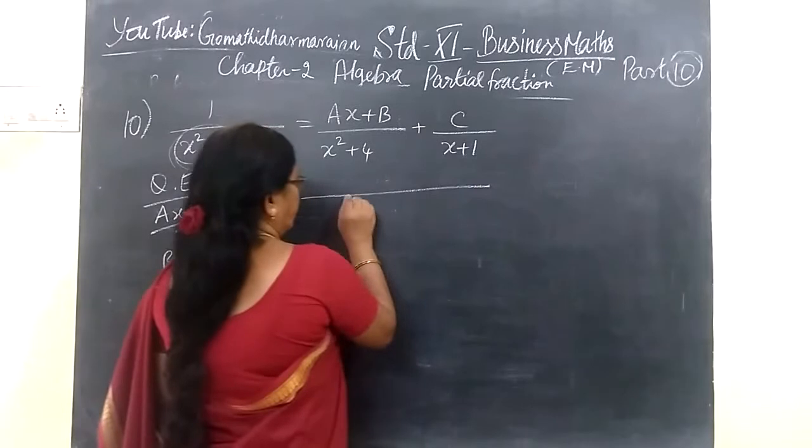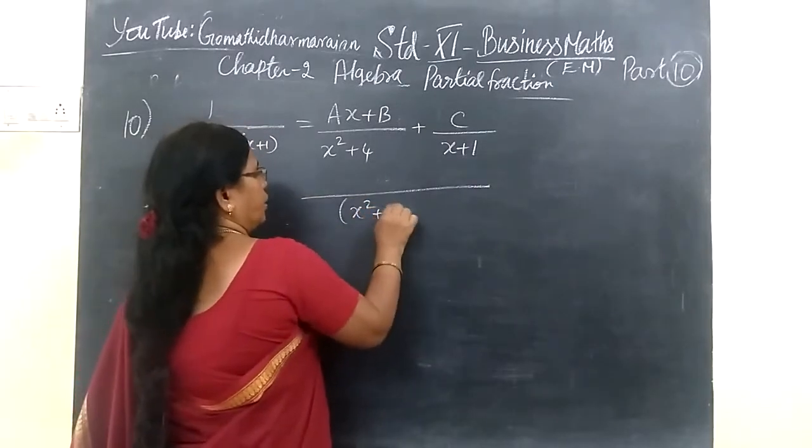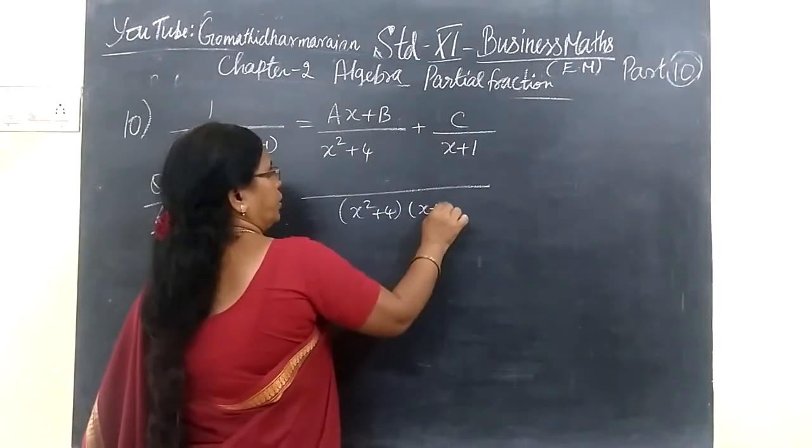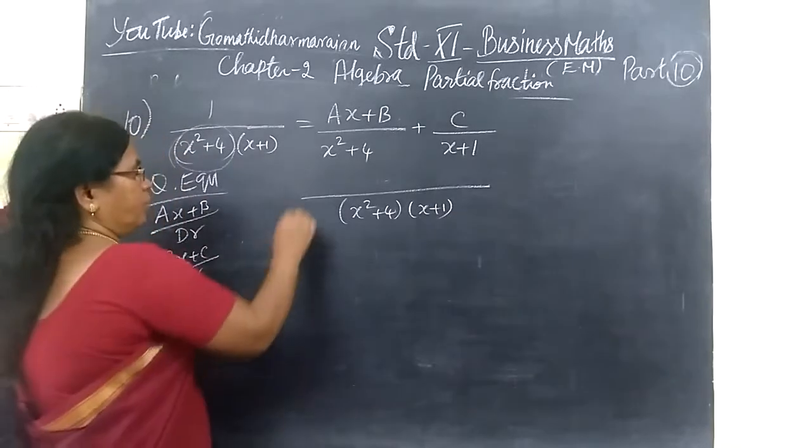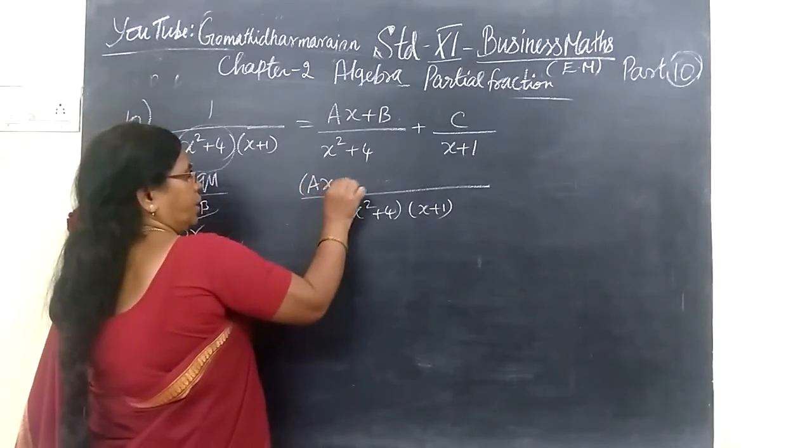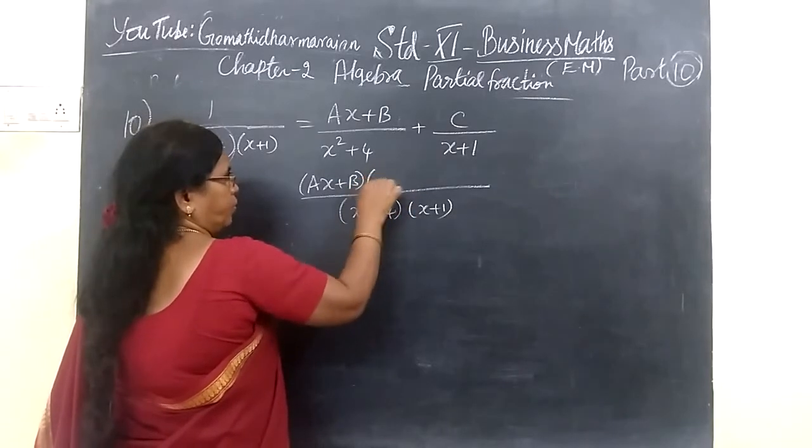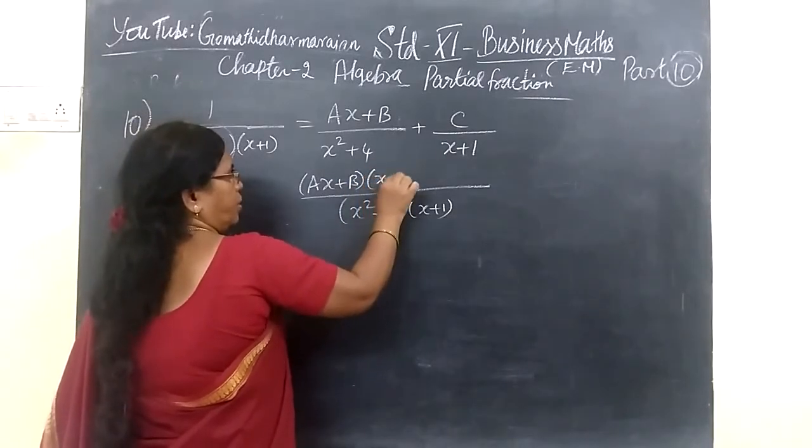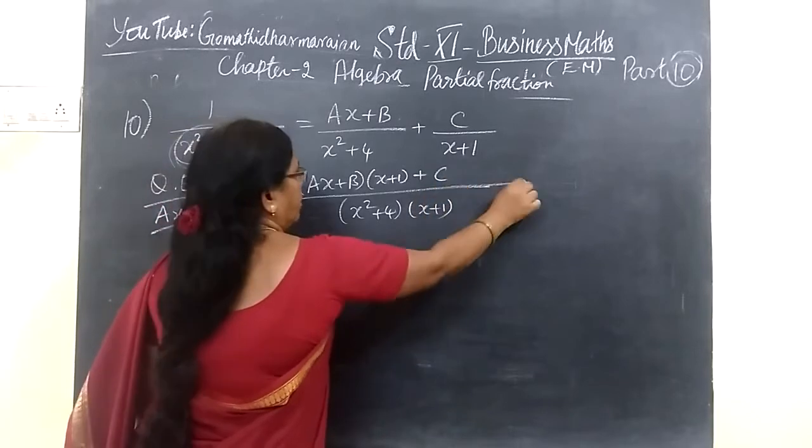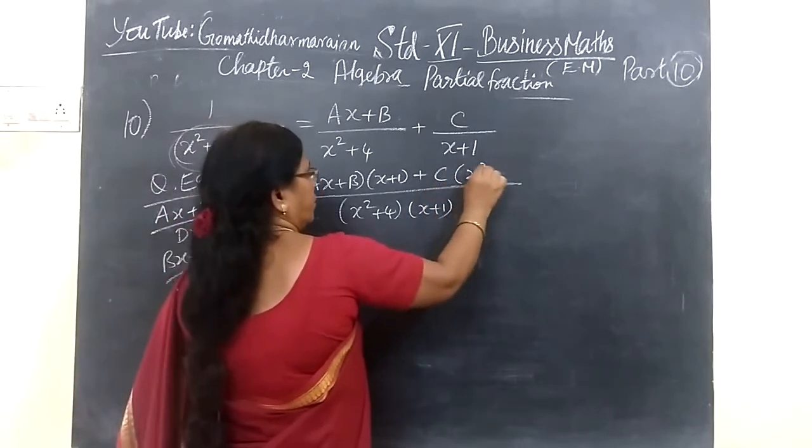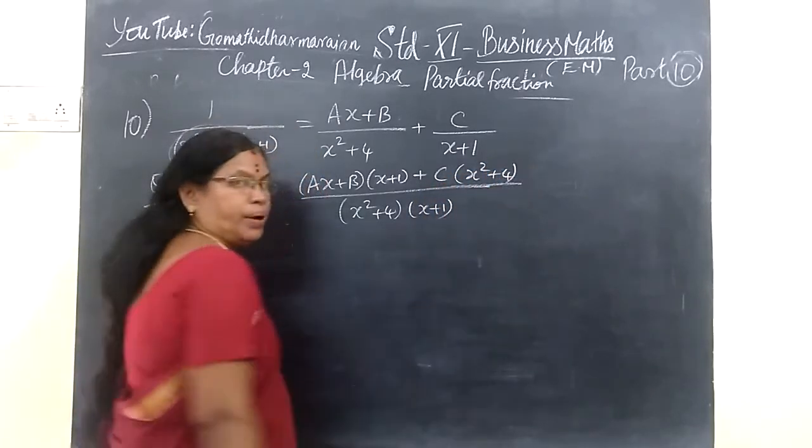If I pause this, you take as LCM x² plus 4, here x plus 1. So what you write: AS plus B in the bracket numerator. Cross multiplication. Just here, cross multiplication.